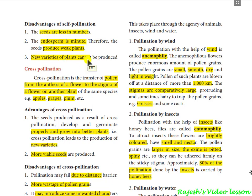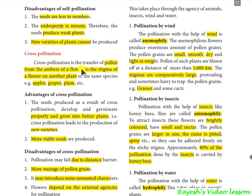Disadvantages of self-pollination: seeds are less in number, endosperm is minor, and new varieties of plants cannot be produced, because it happens in a single flower or single plant, so there is no new variation.